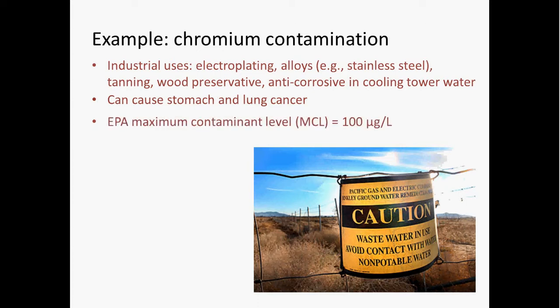The U.S. Environmental Protection Agency requires that municipal water supplies provide water with no more than 100 micrograms per liter — that's 100 parts per billion. The state of California goes further, setting their maximum contaminant level (MCL) at 50 micrograms per liter, essentially saying that anything higher than that is not safe to drink.